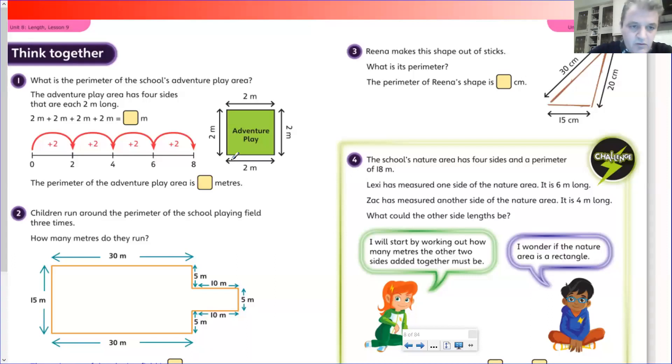What is the perimeter of the school's adventure play area? It's a square shape. We can see that it's a square. Two meters by two meters by two meters. So our total perimeter, quite easy. The perimeter of the play area would be eight meters. That's a square shape, not a rectangle. All the sides are equal, we've got right angles. So the perimeter of that square is eight meters.